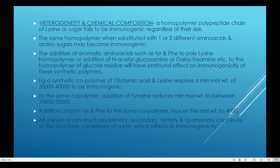All four levels of protein structure — primary, secondary, tertiary, and quaternary — contribute to the structural complexity of a protein, which affects its immunogenicity. Complex structures compared to simple structures will have a better immunogenic nature.